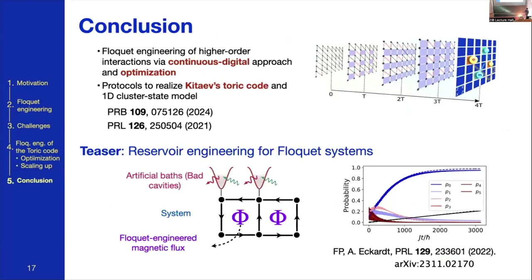In conclusion, I hope I've convinced you that we found an efficient way to simulate higher-order processes and realize Hamiltonians for topologically ordered quantum systems. I discussed the Toric code as the most complicated example; we also studied 1D models such as the 1D cluster state. As a teaser of another research direction, we are also working on engineering dissipation on top of this Floquet framework — using drives to realize a certain Floquet Hamiltonian and then using artificial baths to push the system into the ground state of that high-frequency Hamiltonian. Thank you for your attention.